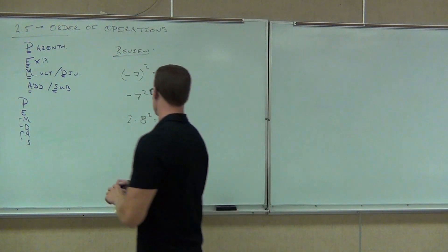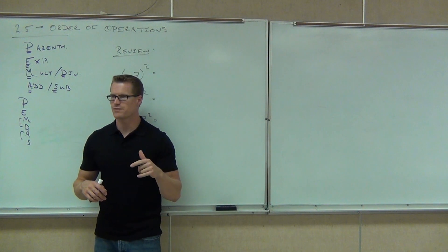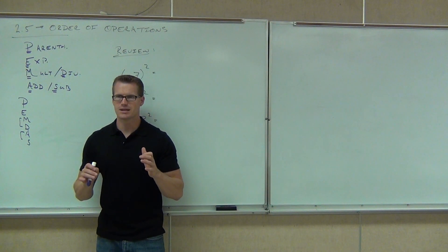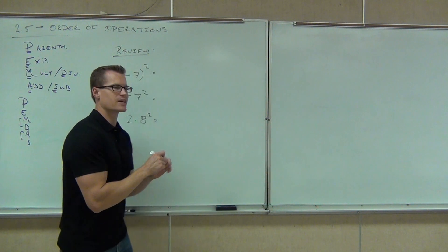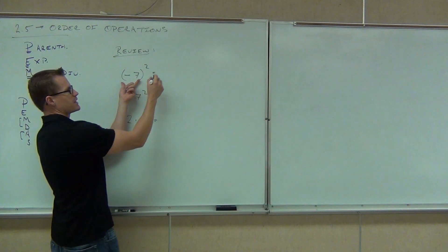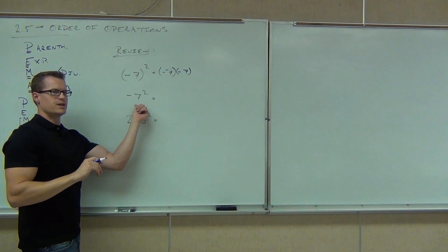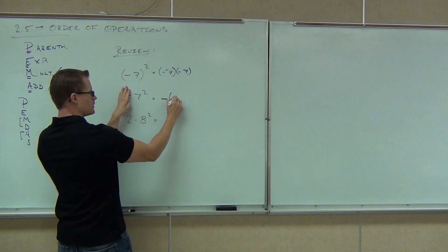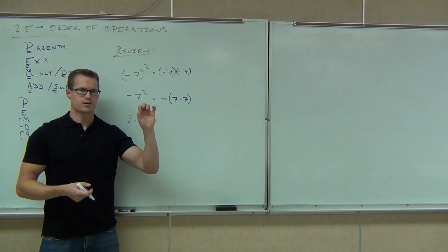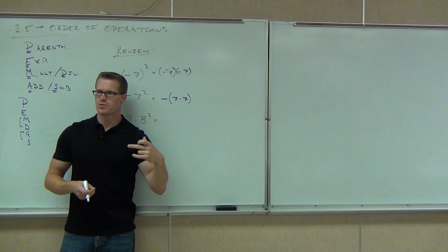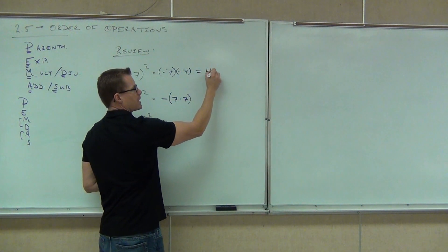The sign of the result depends on whether you have parentheses or not. Parentheses means the negative is included and being squared — so (-7)² means negative 7 times negative 7, giving positive 49. No parentheses means the negative is not included: -7² means negative 7 times 7, giving negative 49. If the negative is not in the parentheses, it does not go along with both numbers — it's just out front, taking the opposite of whatever comes next.